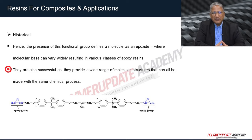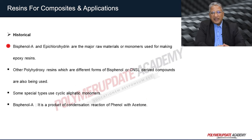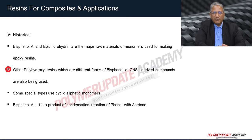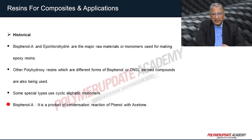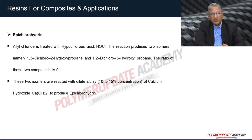Epoxy resins are successful because they offer diversity in molecule structure and can be produced using the same chemical method. Bisphenol A and epichlorohydrin are major raw materials or monomers used for making epoxy resins. Other polyhydroxy resins, which are different forms of bisphenols and CN-acid-derived compounds, are also being used. Some special types use cyclic aliphatic monomers. Bisphenol A is the product of a condensation reaction of phenol and acetone.